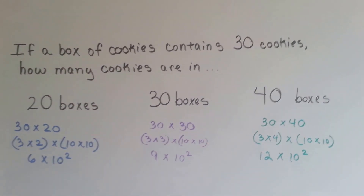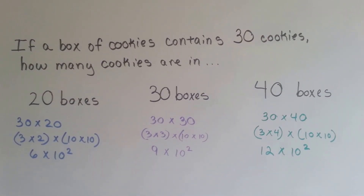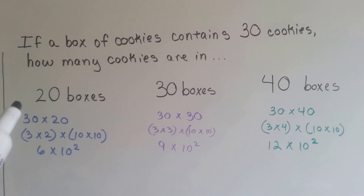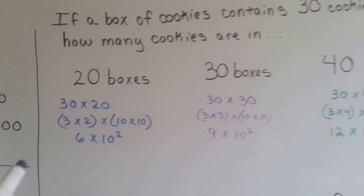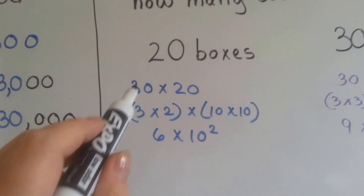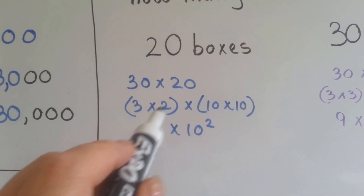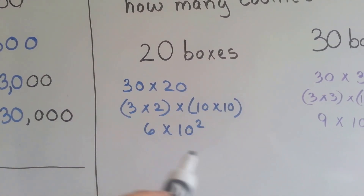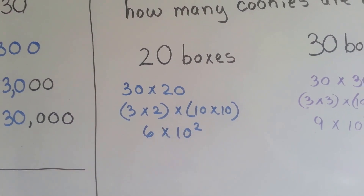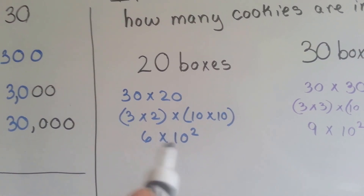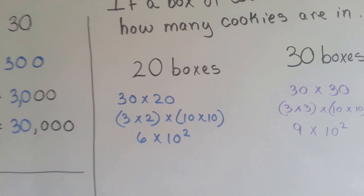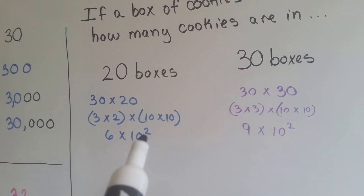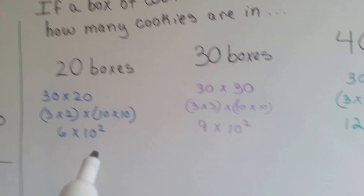If a box of cookies contains 30 cookies, how many cookies are in 20 boxes? We'd have to multiply 30 times 20. We group the 3 and the 2 together and put the 10 and 10 together, giving us 6 times 10 to the second power. We can solve it with mental math: 10 to the second power is 100, so that would be 600.